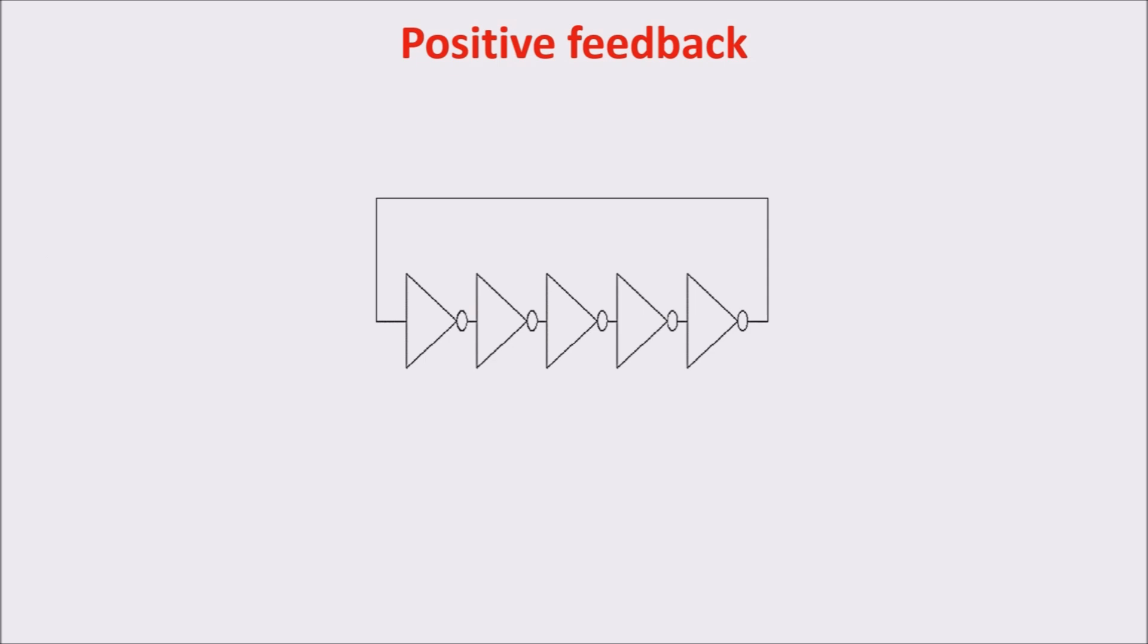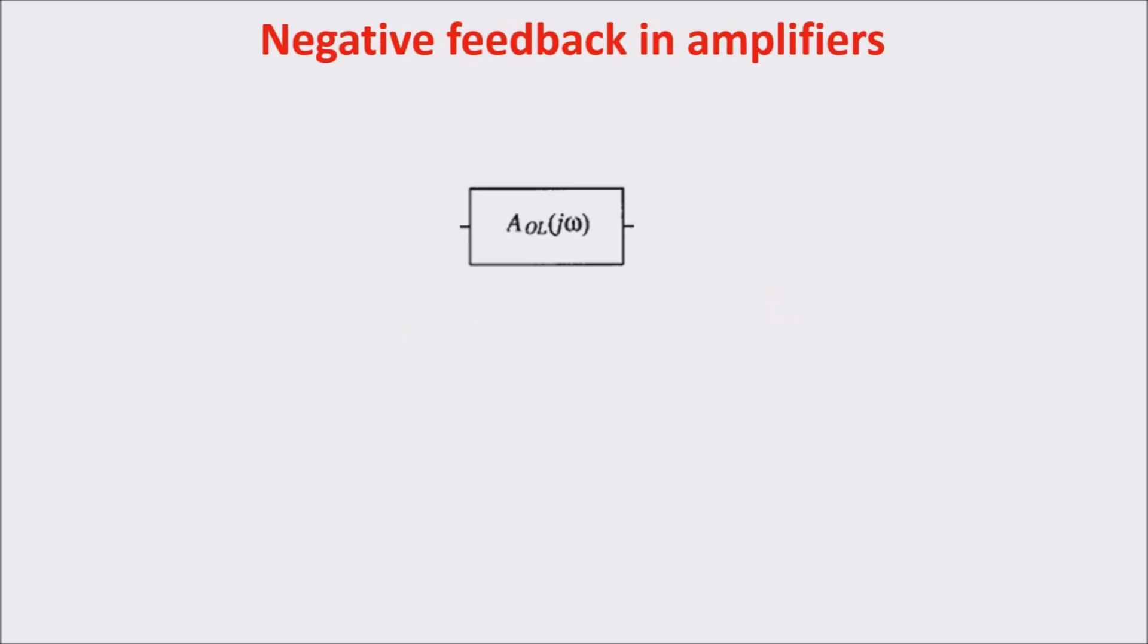A ring oscillator is a cascade of an odd number of inverters with a feedback. The first feature of the ring oscillator is the logical instability. If we put a high value in the input, we have a low value at the end of the cascade, which is fed back in the input by the feedback, putting the input to low value, which in turn produces a high value at the end of the cascade, and so on. There is a combinatorial contradiction and the circuit is unstable. So in oscillators, we use the feedback to generate the instability we need for the oscillation.